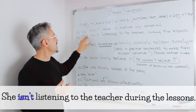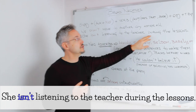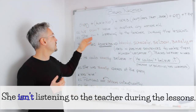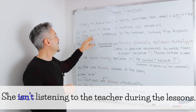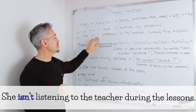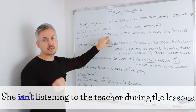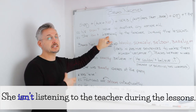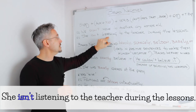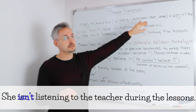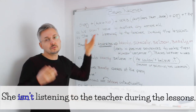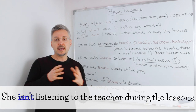Another example: she isn't listening to the teacher during the lessons. Here we have the verb 'to be'. So the verb 'to be' in the third person singular is 'is'. Then we have 'not', so 'isn't' — contraction. Then we have 'listening' in this case because we're making the sentence in the present continuous, so it's a present participle — 'listening to the teacher during the lessons'. So this is a normal negative statement.